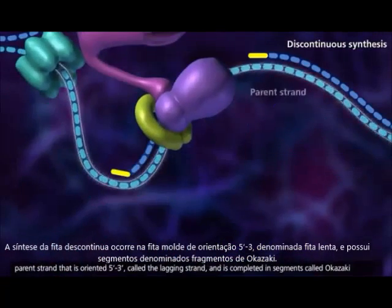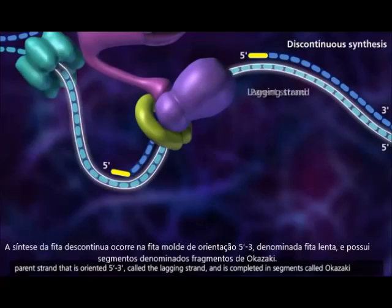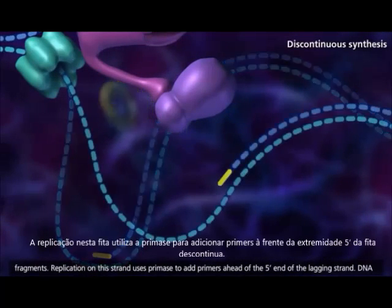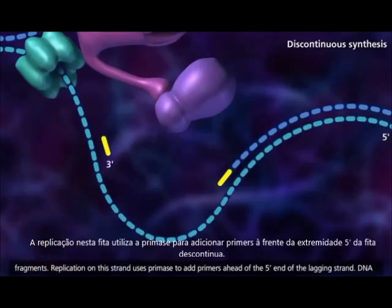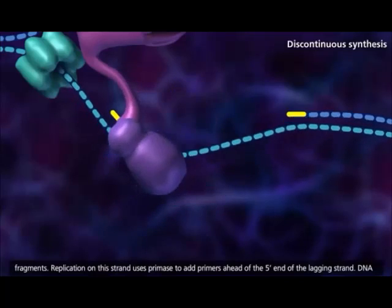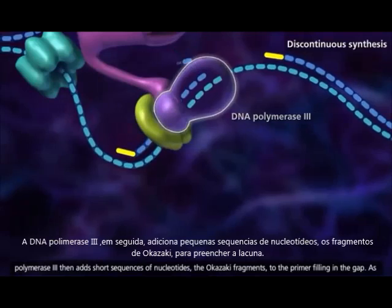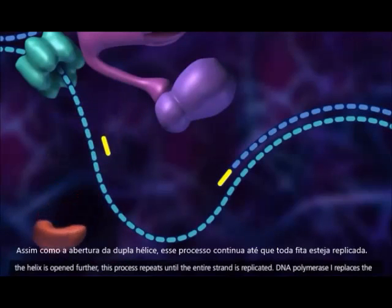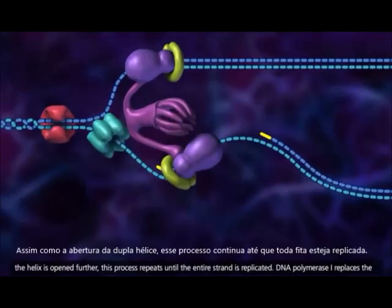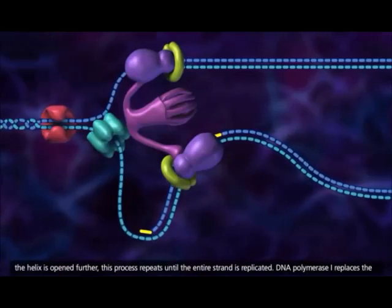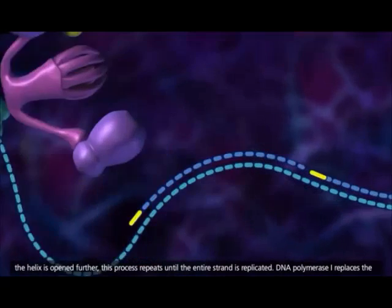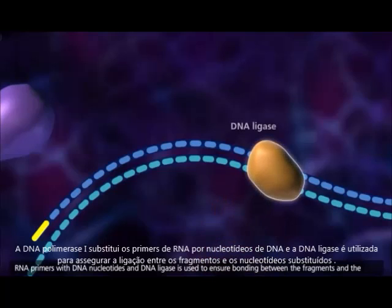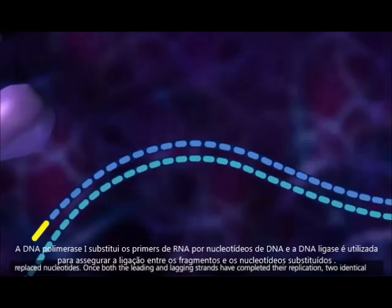Discontinuous synthesis occurs on the parent strand that is oriented 5' to 3', called the lagging strand, and is completed in segments called Okazaki fragments. Replication on this strand uses primase to add primers ahead of the 5' end of the lagging strand. DNA polymerase 3 then adds short sequences of nucleotides, the Okazaki fragments, to the primer filling in the gap. As the helix is opened further, this process repeats until the entire strand is replicated. DNA polymerase 1 replaces the RNA primers with DNA nucleotides, and DNA ligase is used to ensure bonding between the fragments and the replaced nucleotides.